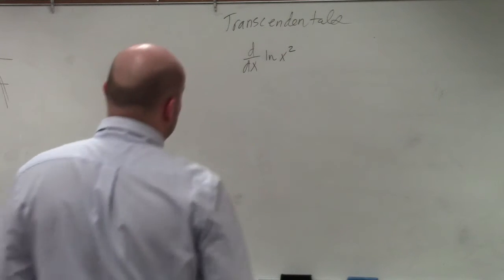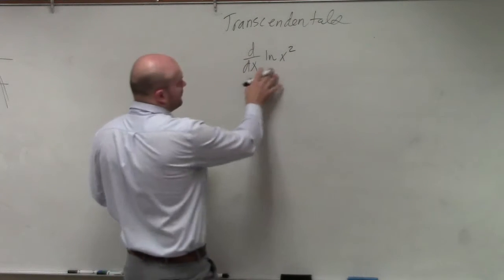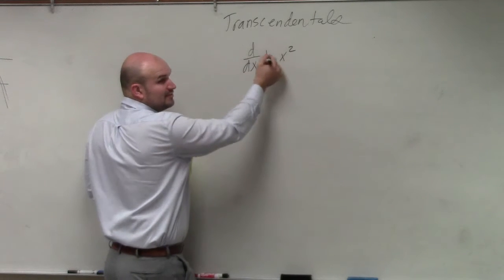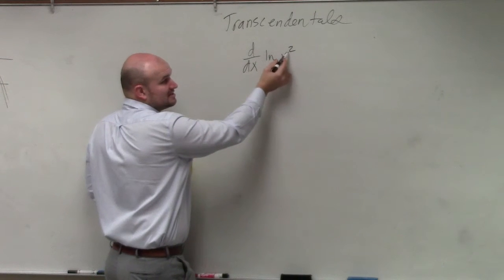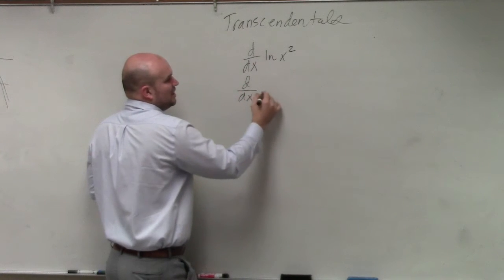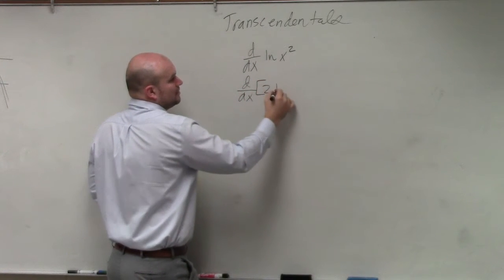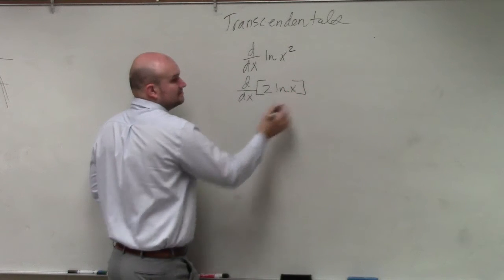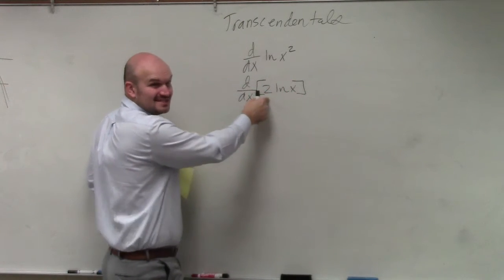OK, so in this example, one thing we can do before taking the derivative, we can rewrite this. Again, we can assume that this 2 is inside. So I can basically rewrite this as d over dx of 2 ln of x. Now, you guys can see this is a constant, right?